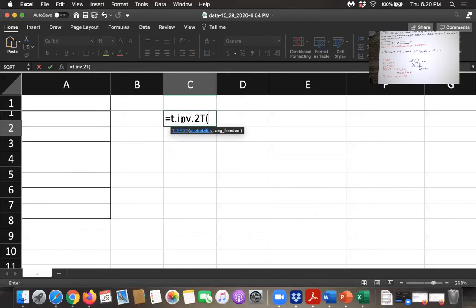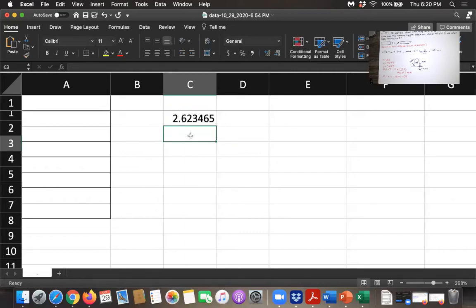The first thing it asks for is the probability. What is the area in the two tails? In our case, because we want a 99% confidence interval estimate, we want α equals 0.01. That's the area in two tails. And the degrees of freedom is 105. So we get t sub α/2 of 2.623.